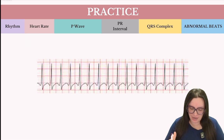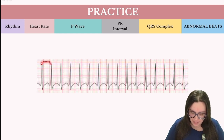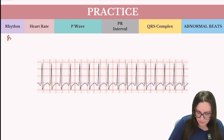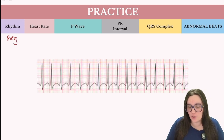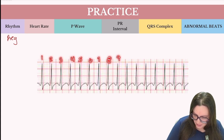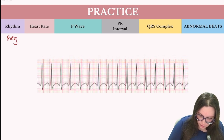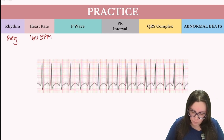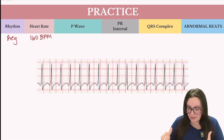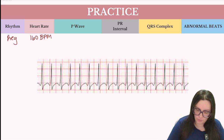Let's take a look at our last practice question. Starting by identifying our rhythm — is it regular or irregular? Based on what I'm seeing, the QRS complex always falls in the same place, so we can call this rhythm regular. Counting QRS complexes: 1, 2, 3, 4, 5, 6, 7, 8, 9, 10, 11, 12, 13, 14, 15, 16 — approximately 160 beats per minute. The ventricular rate is so fast that we're not going to be able to see distinguishable P waves, so no P waves are present.